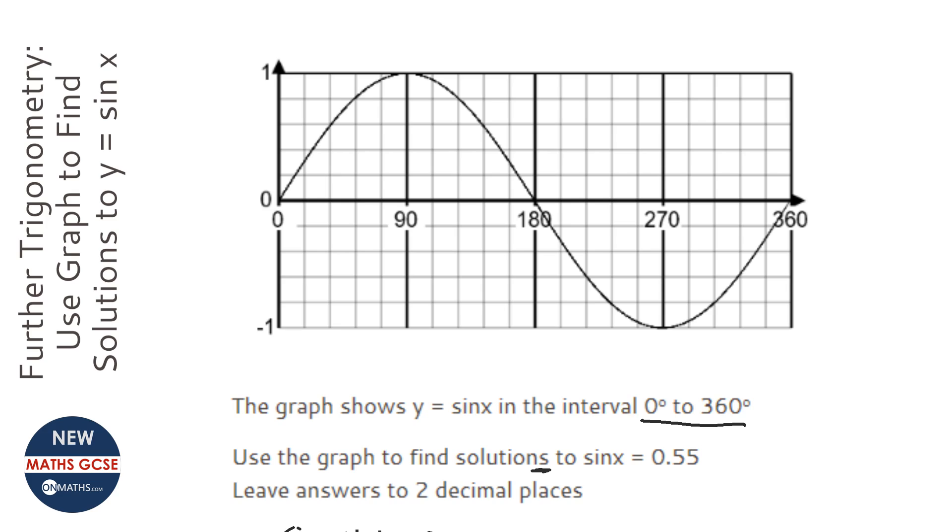These graphs go on infinitely, so even if it did show you a couple of answers, it can't possibly show you all the answers. And so we need to just quickly sketch a graph, which actually is given to us in this question, and what we do is we draw a line across from the number given to us in the question, in this case 0.55